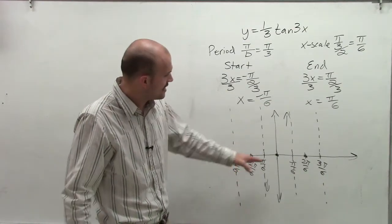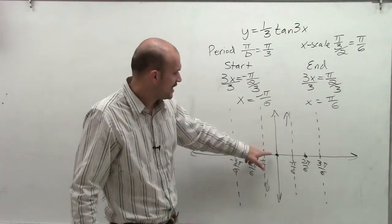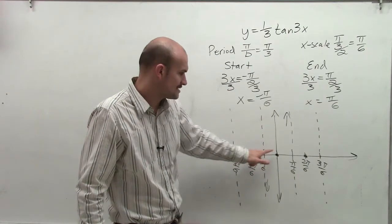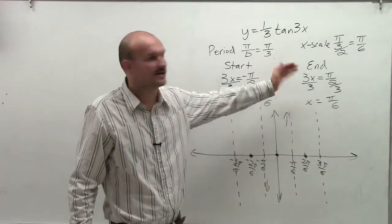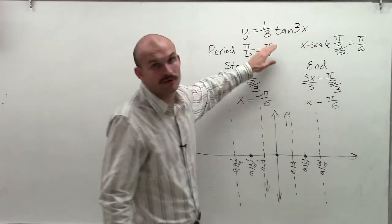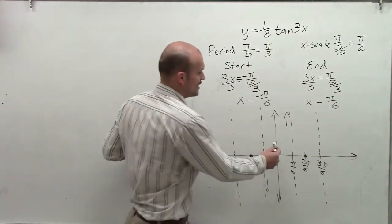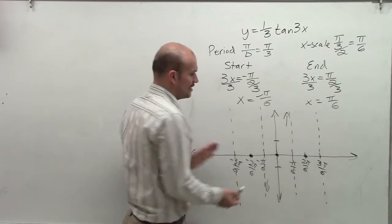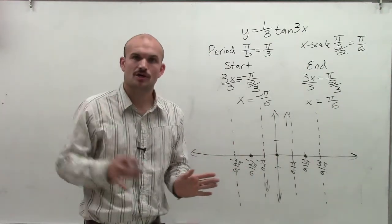So the best advice I would say is to find a value between your asymptote and your intercept, and then plug that into your function. And what we notice is when I plug it into my function and then multiply it by one third, I'm going to get a value. And if you can just plot those values on there, you'll get a good idea of what the curve is going to look like.